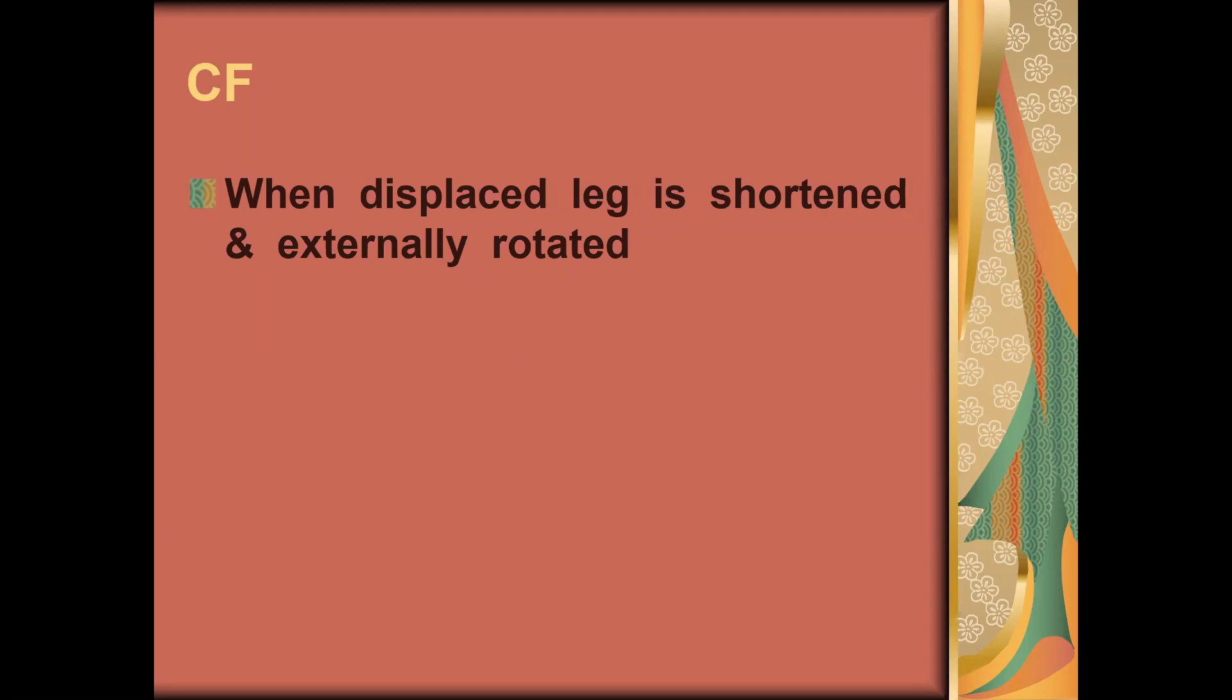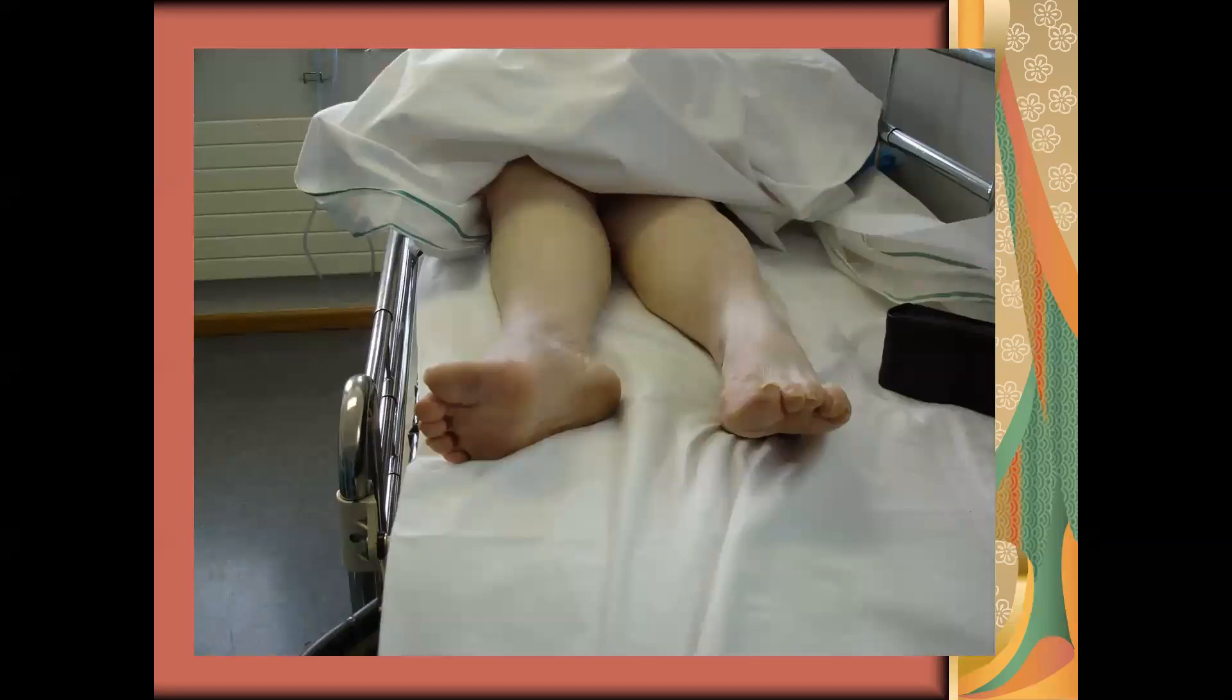The second important thing is that the leg will be shortened and externally rotated, not like the position we saw in hip dislocation where the leg is in internal rotation. This is a patient with right-sided femur neck fracture. You can see this foot is externally rotated, this one is in neutral. External rotation goes with femur neck fracture, and as you will learn in the next lecture, it also goes with intertrochanteric and subtrochanteric fracture. These three together we call hip fractures.